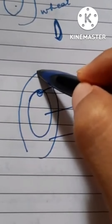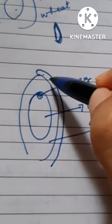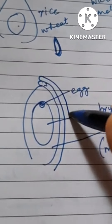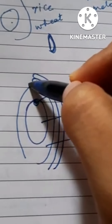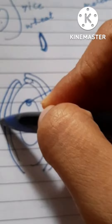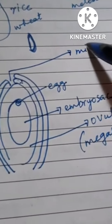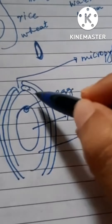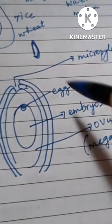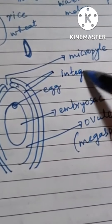An ovule has protective coverings, but these coverings do not completely enclose it. There is one area called the micropyle — a point on the ovule that is not covered by these coverings. The protective coverings are called integuments. I have drawn two integuments here.